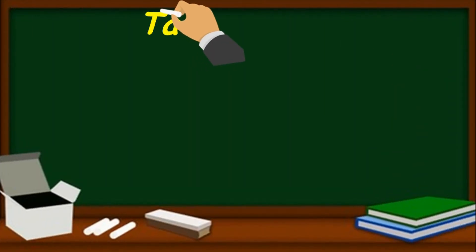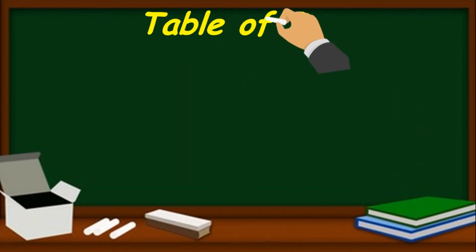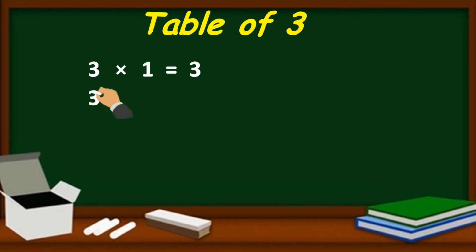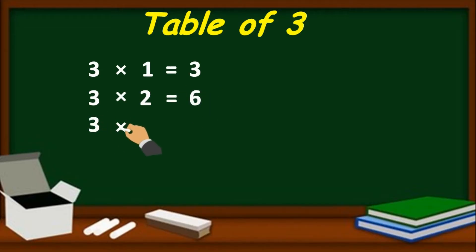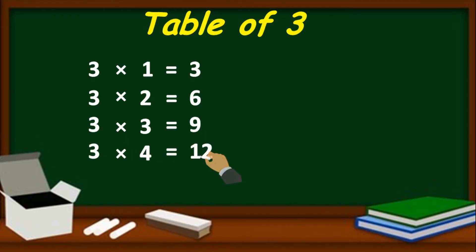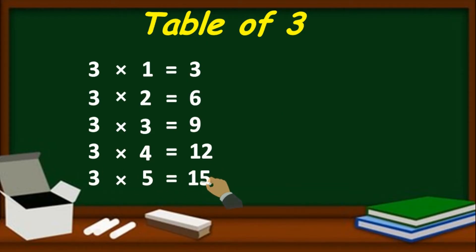Table of 3. 3 one's are 3, 3 two's are 6, 3 three's are 9, 3 four's are 12, 3 five's are 15.